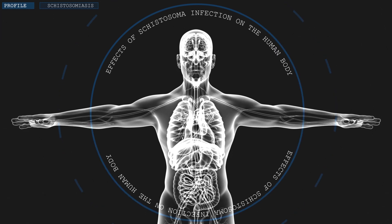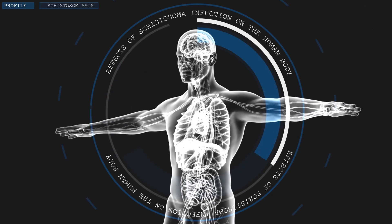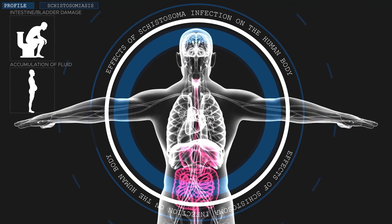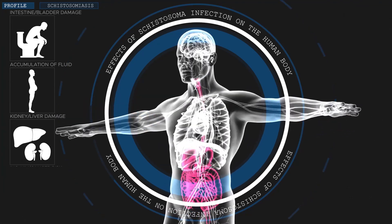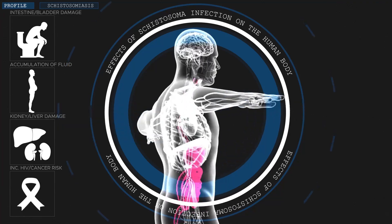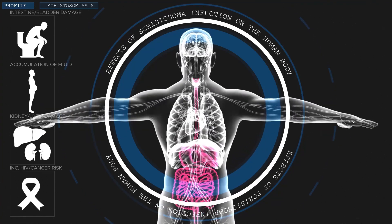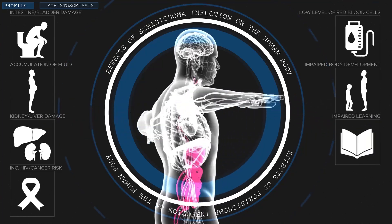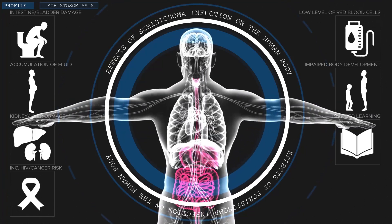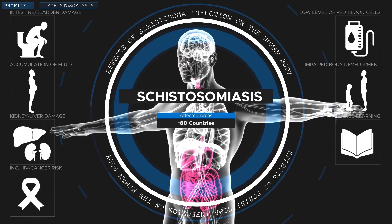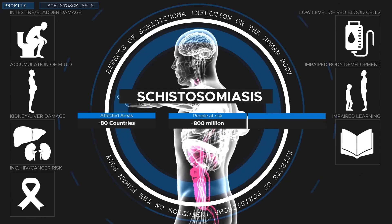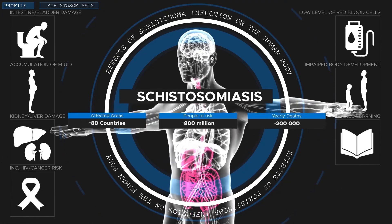Which brings us to the disease itself. Schistosomiasis can have a wide range of symptoms depending on the species of worm or the individual. Common symptoms are abdominal pain, diarrhea and blood in stool or urine, the accumulation of fluid in the peritoneal cavity and hypertension of abdominal blood vessels, long-term kidney, liver and bladder damage, as well as an increased risk of bladder cancer and HIV infection, the latter particularly in women. In children, which are most commonly affected by the disease, it can also cause anemia and impact body development and the ability to learn. In most cases, these symptoms impair and disable rather than kill, but with over 78 countries affected and nearly 800 million people living in areas where infection can occur, the raw number of deaths, even if comparably rare, is obviously still extraordinarily high.